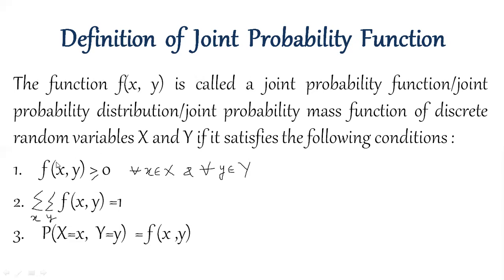So number one condition, f(x,y) should be non-negative. You know what is the meaning of f(x,y). Its meaning is that the probability that x takes the value x and y takes the value y. So because probability is always a non-negative number, every pair of probability should be non-negative for all the values of x and for all the values of y.